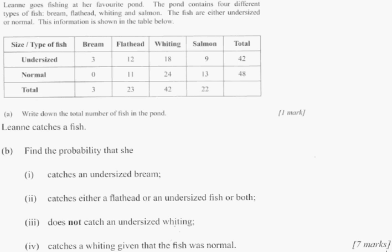We're back to do a Paper 2 problem from 2012. It actually was just on the May paper two with 21 points on this problem. That's a lot of points out of 90 for just probability, which is a fairly straightforward topic. So let's look at it.